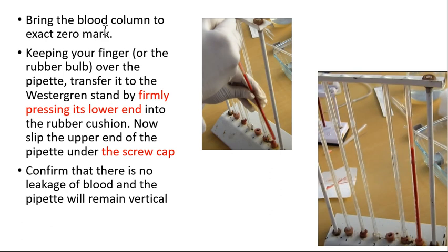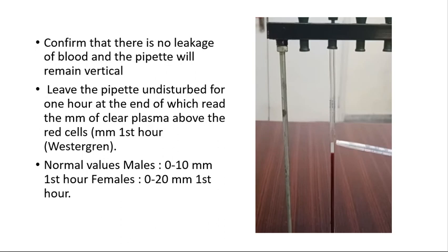With your finger still over the top of the pipette, firmly press its lower end into the rubber cushion of the Westergren stand to fix it, then slip your finger away and fix the upper end under the screw cap. Confirm there is no leakage and that the pipette is vertical. Leave it undisturbed for one hour, then read the plasma column from zero to whatever value is shown.